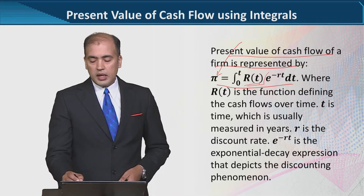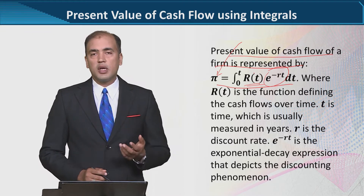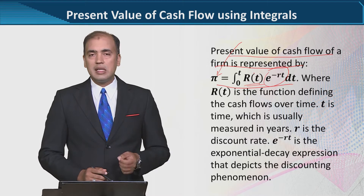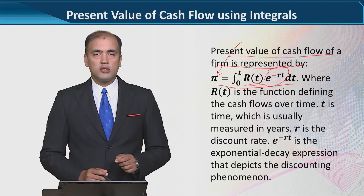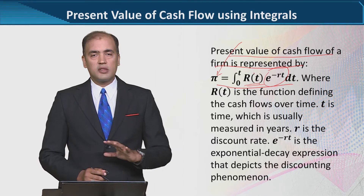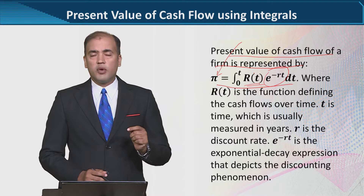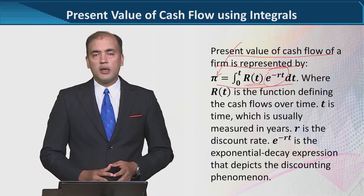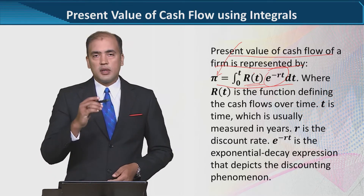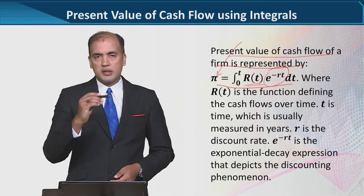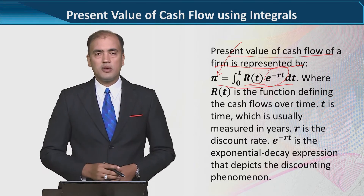Secondly, there is an exponential element showing that there is a decline. Because it is an exponential decay, you can see that e raised to the power minus RT. This minus is actually going to cause an exponential decay, and that is evident because when we calculate the time value of money, it is declining over time. These factors, like time value of money among others, are going to decline this value over time.